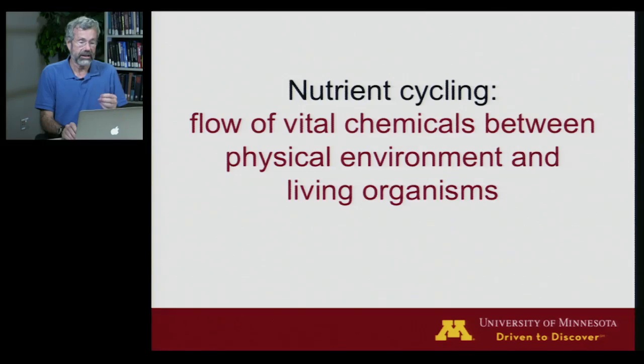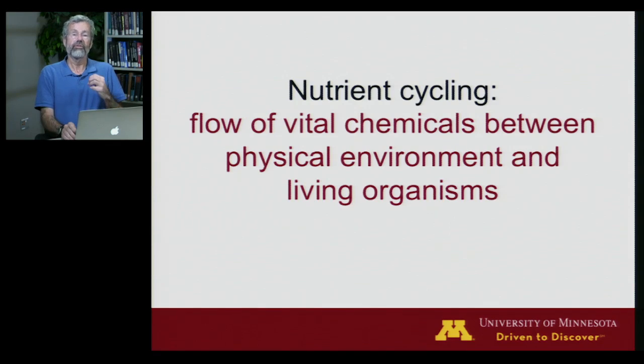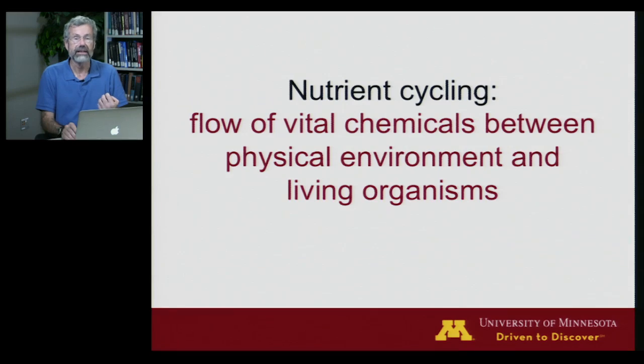The other major category of abiotic factors in ecosystem ecology comes from chemistry. What we want to look at is nutrient cycling — the flow of vital chemicals between the physical environment and living organisms.